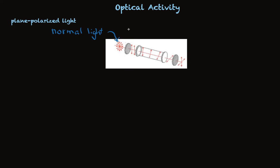But when it goes through a filter, and this is a polarizing filter like you have in polarized sunglasses, you end up with light that's vibrating only in one plane.